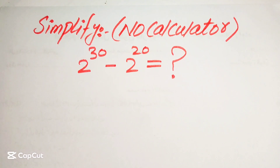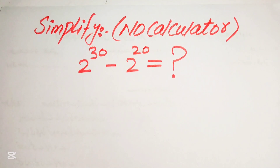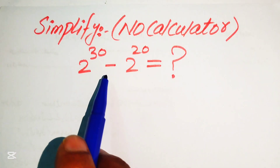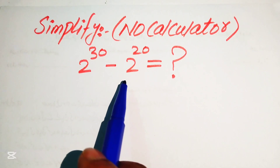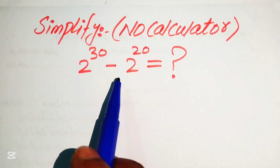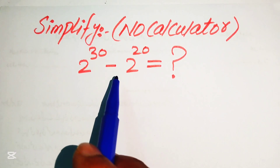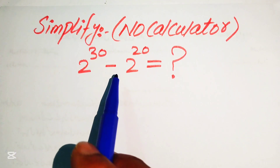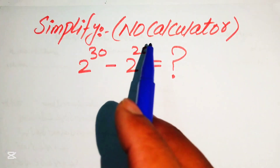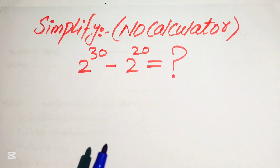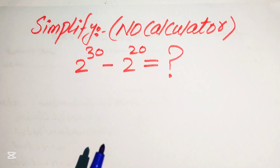Hello everyone. How to simplify this nice algebraic expression: 2 to the power of 30 minus 2 to the power of 20. We will write this algebraic expression into simplified form. Remember, a calculator is not allowed in this problem, so we will show all of the working on paper.